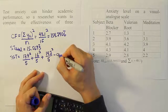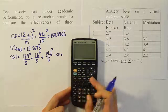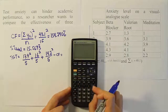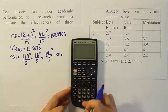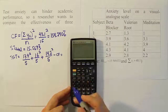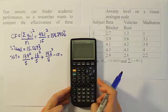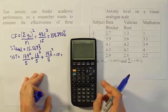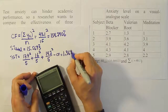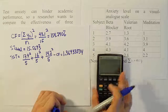So the full calculation is: 17.9² ÷ 5 + 16² ÷ 5 + 14.2² ÷ 5 minus the correction factor of 154.2406 repeating. That gives us 1.3693 repeating — specifically 1.36933334. That's our sum of squares for treatment.